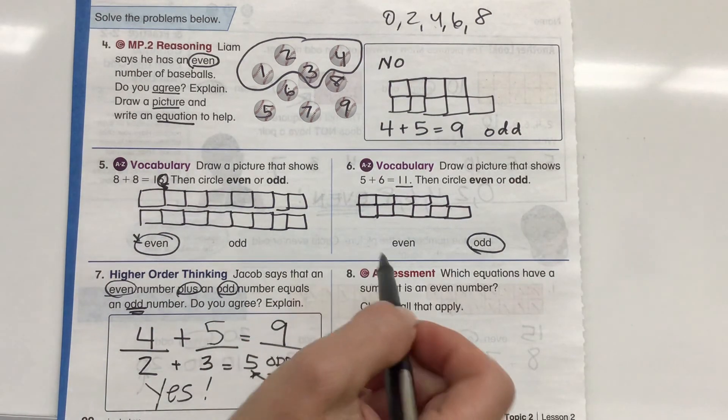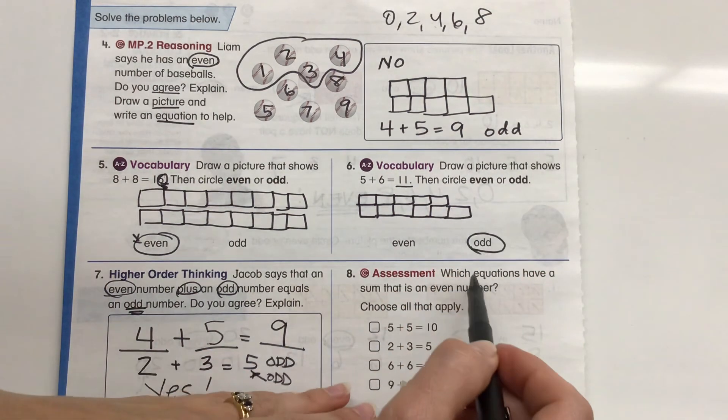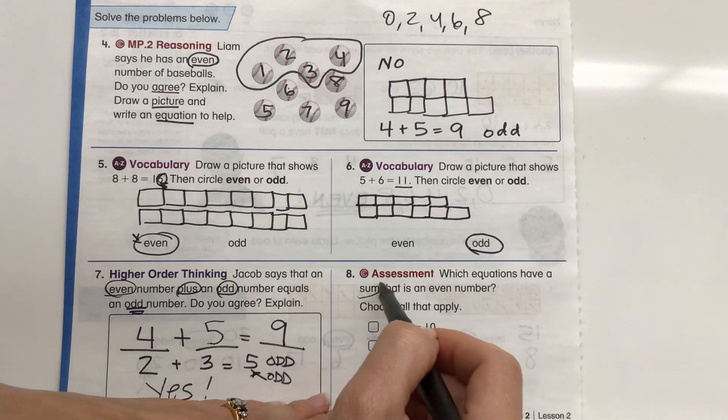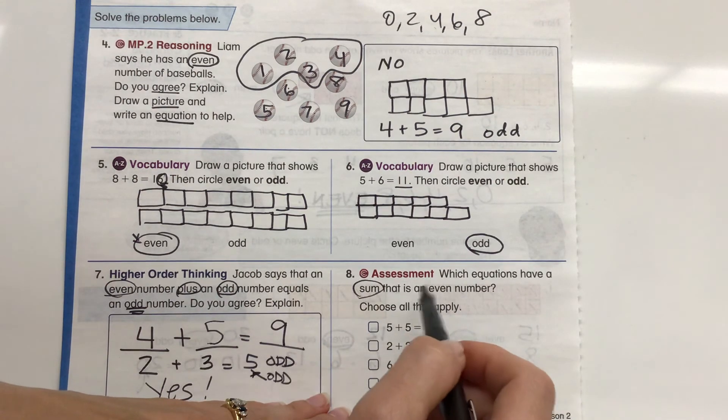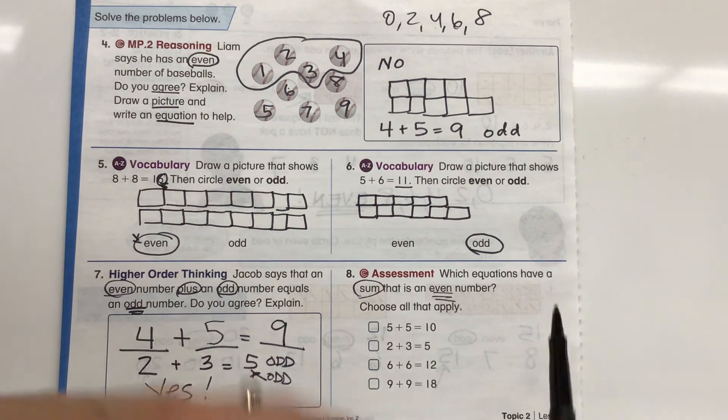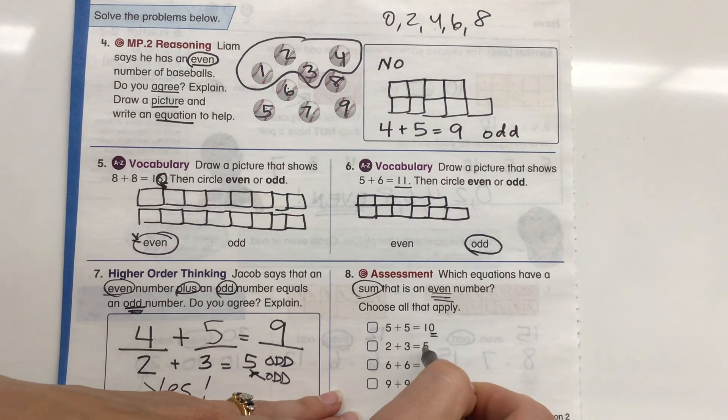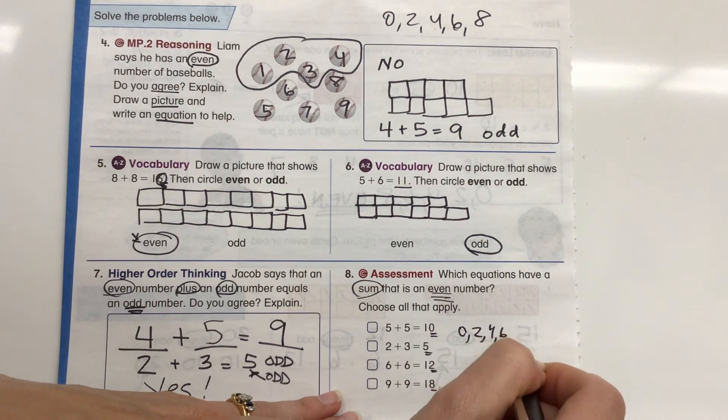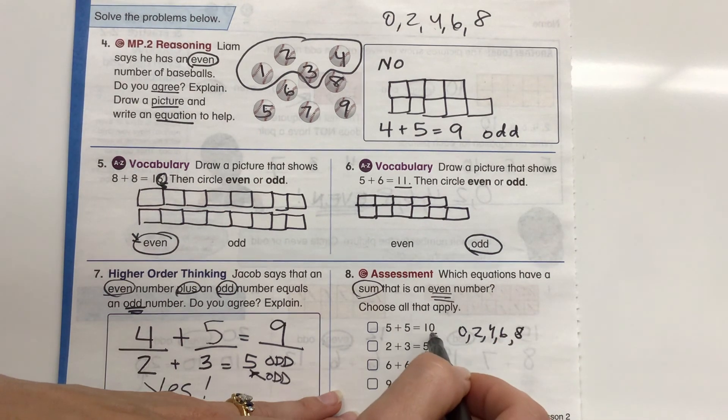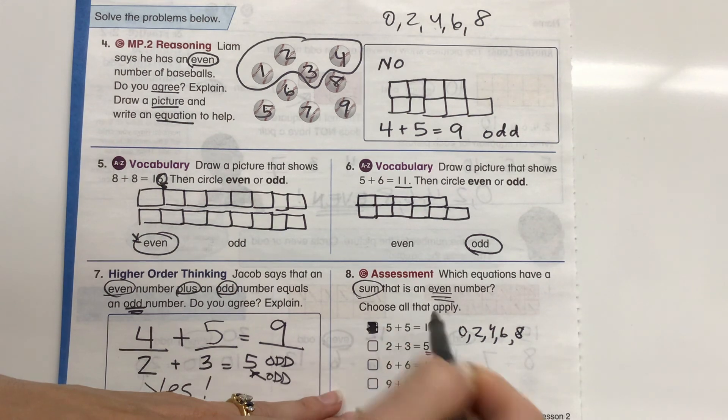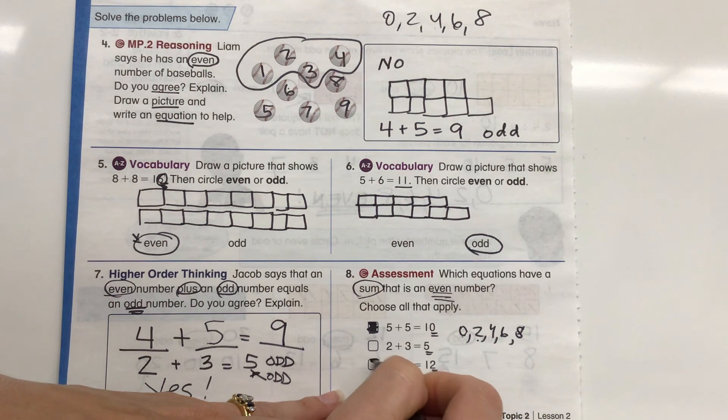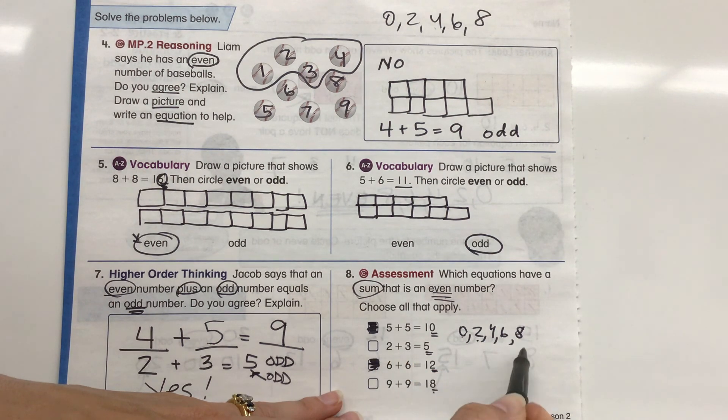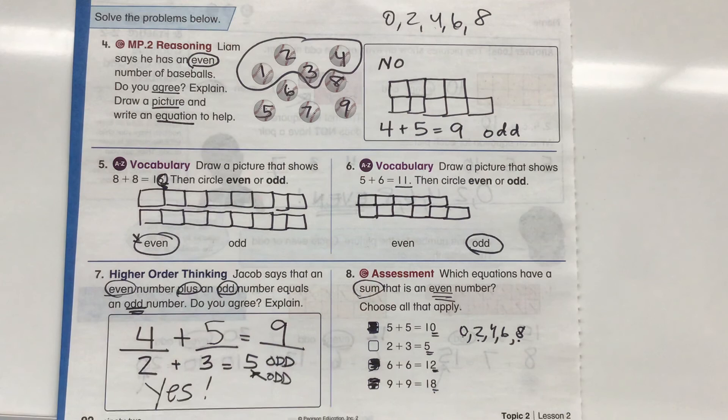Okay. Oh, there's our common core assessment. We know we'd have questions just like this on our final exam. Which equations have a sum - so that's the answer after the equal sign - that is an even number. Choose all that apply. So we're going to look at the number in the ones place and see which ones are 0, 2, 4, 6, 8. Who do we appreciate? Even numbers. I have a 0 here. Yep. 10 is an even sum. 5? Nope. 12? There's a 2 in it. Yep. 2 is an even number. And 18? There's an 8 in the ones place value. There's an 8 there. So we know that is correct. So 3 out of the 4 are correct.